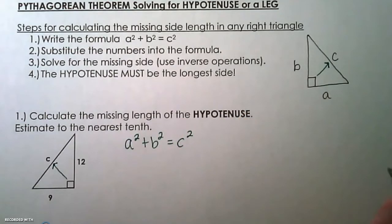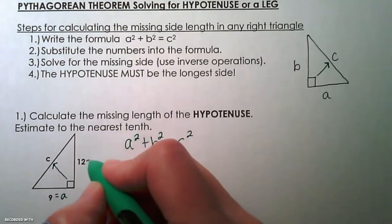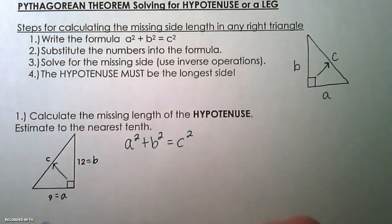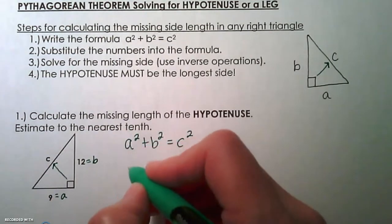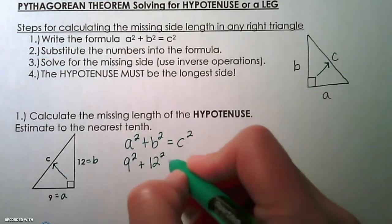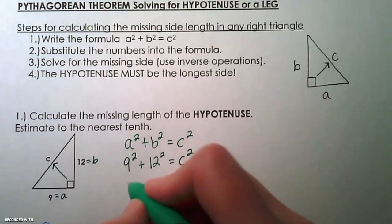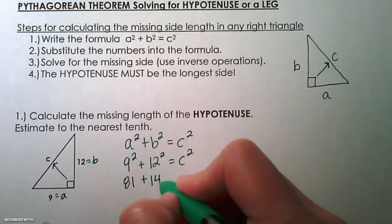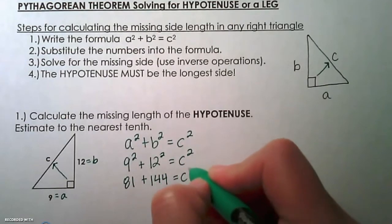We're going to substitute the values into the formula, so 9 and 12 are a and b. Those could be swapped, but c has to be the hypotenuse value. So 9 squared plus 12 squared equals c squared. Square the 9, which gives you 81, square the 12, which is 144, equals c squared.